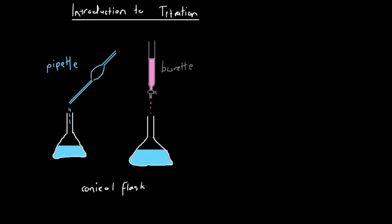Today we're going to look at an introduction to the idea of titration. Titration is a process we use when we have one standard solution — a solution of which we know the concentration very accurately — and we have another solution with an unknown concentration. We use the accurate concentration of the standard solution in order to accurately calculate the concentration of the other solution.